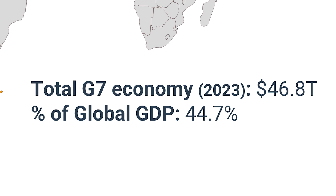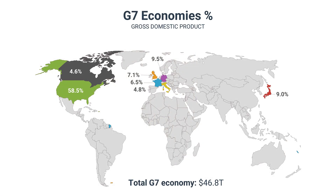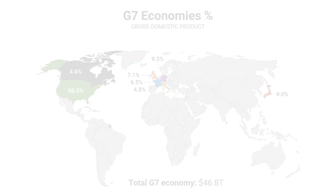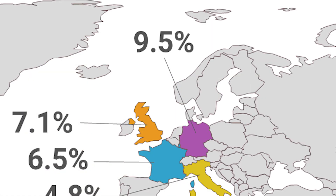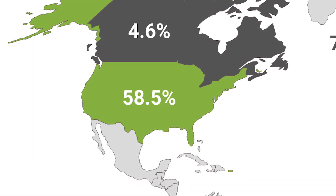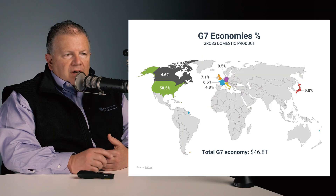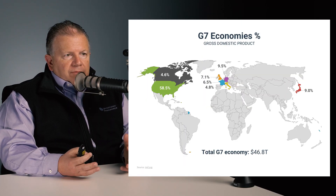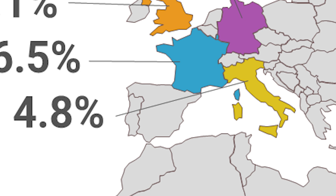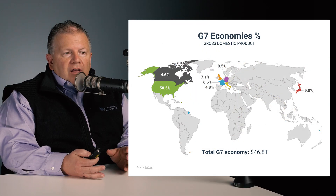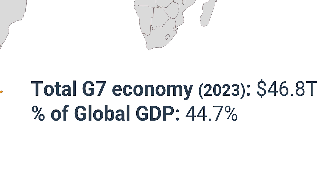If you look at the G7 economies, they make up 44.7% — so just under 45% of global GDP comes from just these seven countries, totaling $46.8 trillion. Shifting to the G7 economies as a percentage of the total G7, you can notice that Germany comes in at 9.5% and Japan at 9%. The US makes up 58.5% of the G7 economies. The UK accounts for 7.1%, France 6.5%, and Italy just under 5% of the G7. So the total GDP of the G7 economies is $46.8 trillion in 2023 numbers.